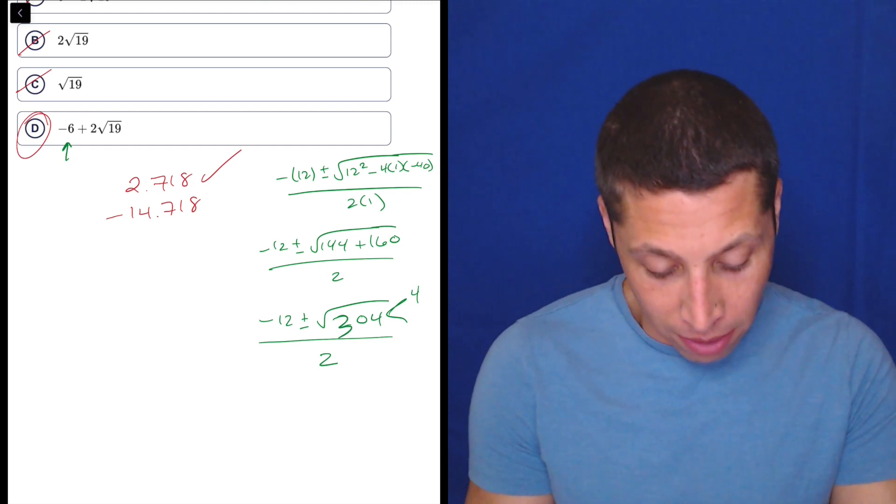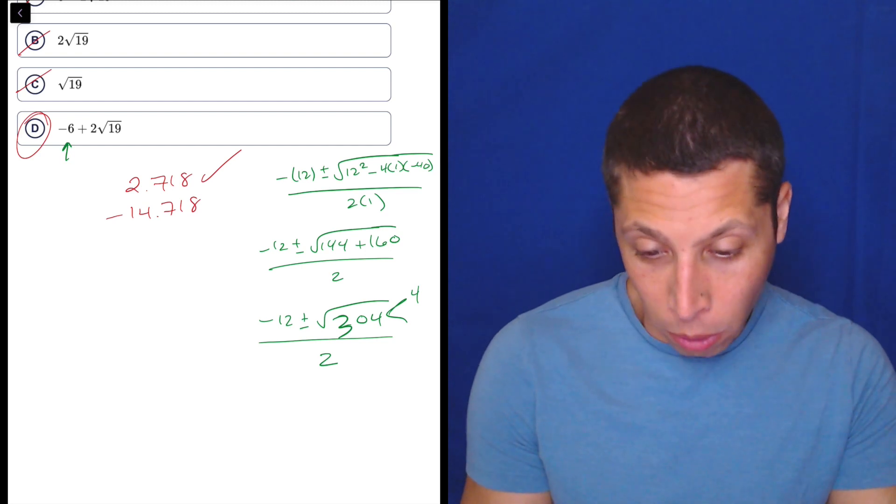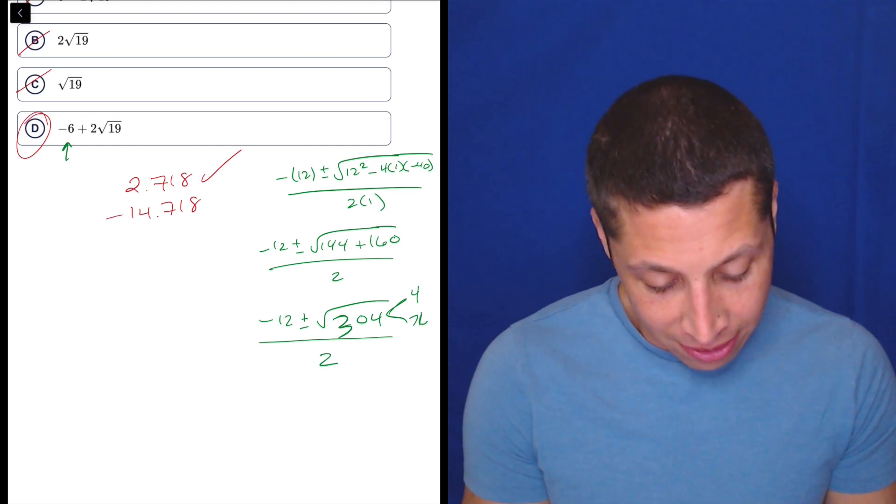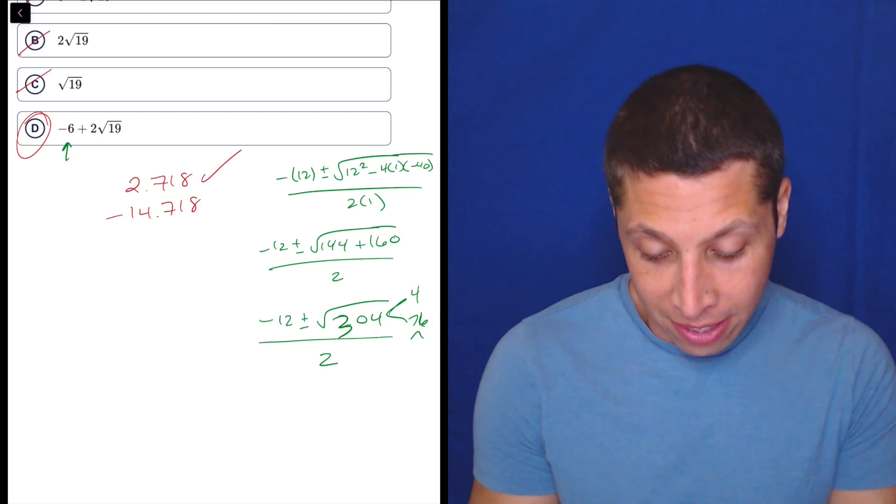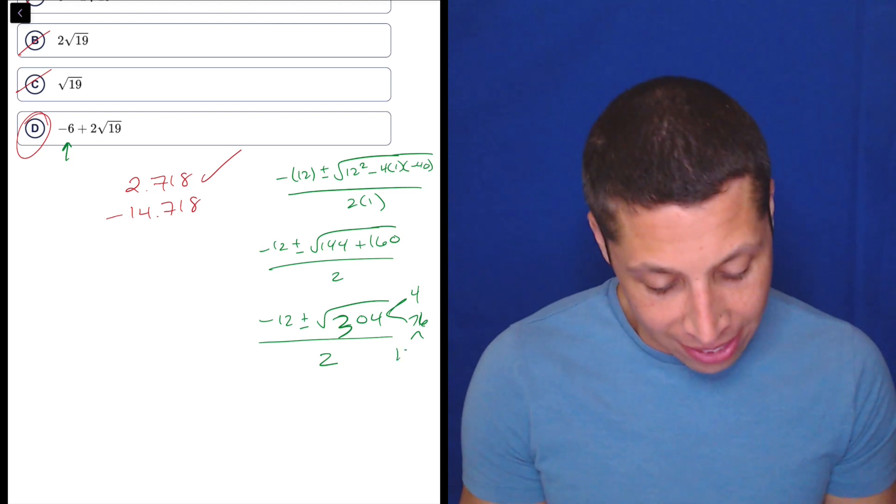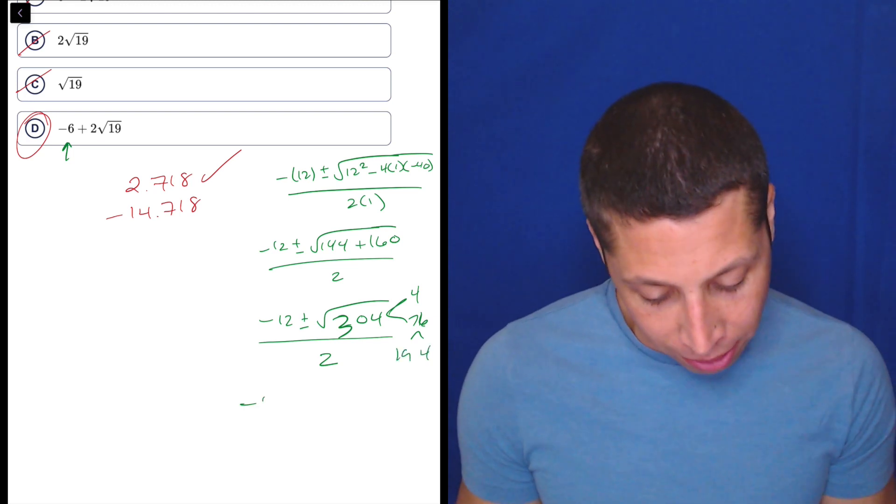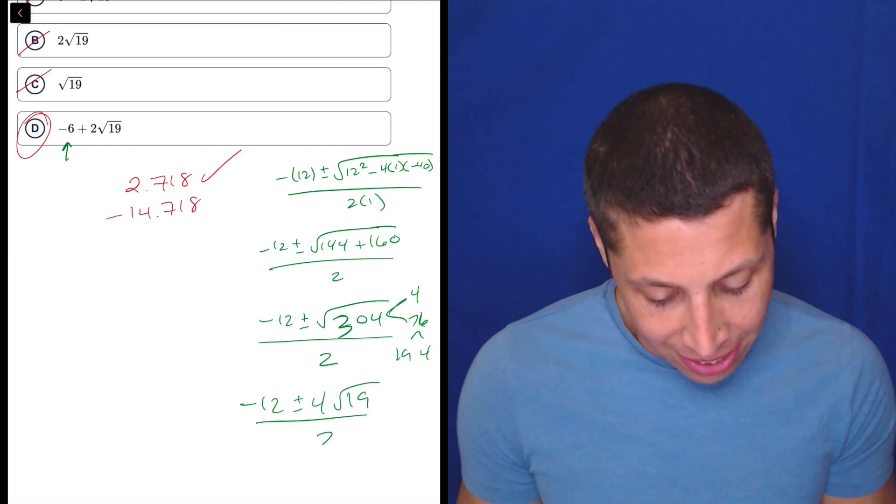So 304 divided by 4 is 76. And then 76 divided by 4 is 19. So you got to pull those out. So it's negative 12 plus or minus 4 root 19 over 2.